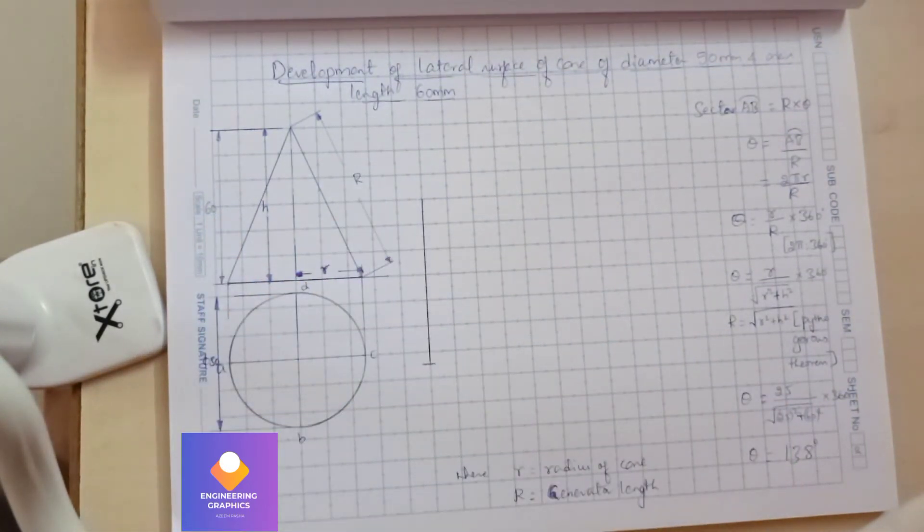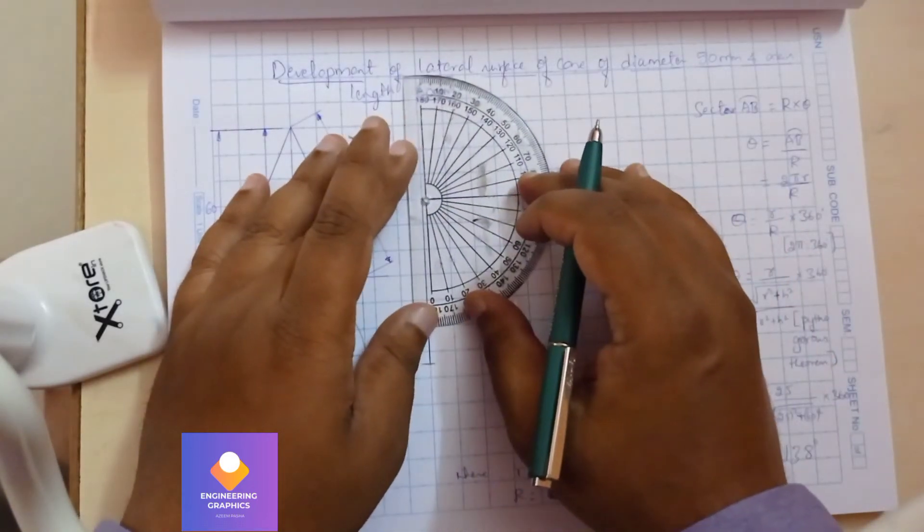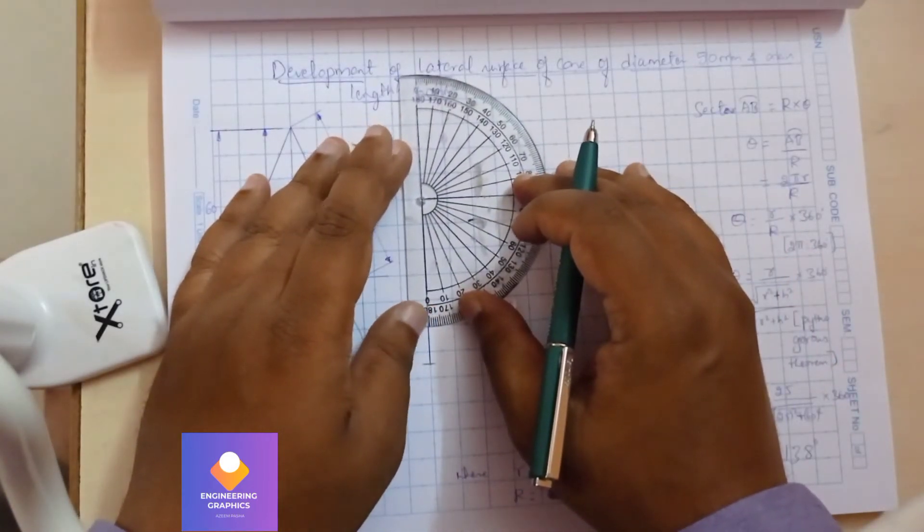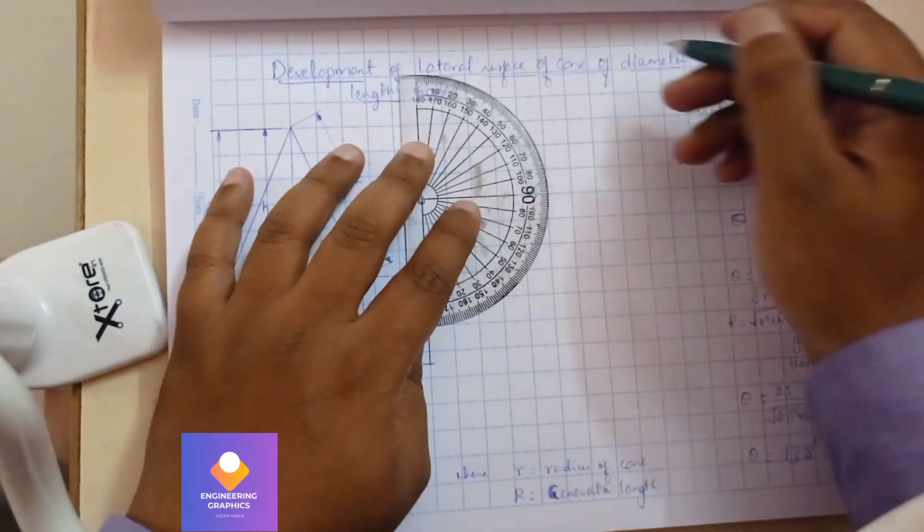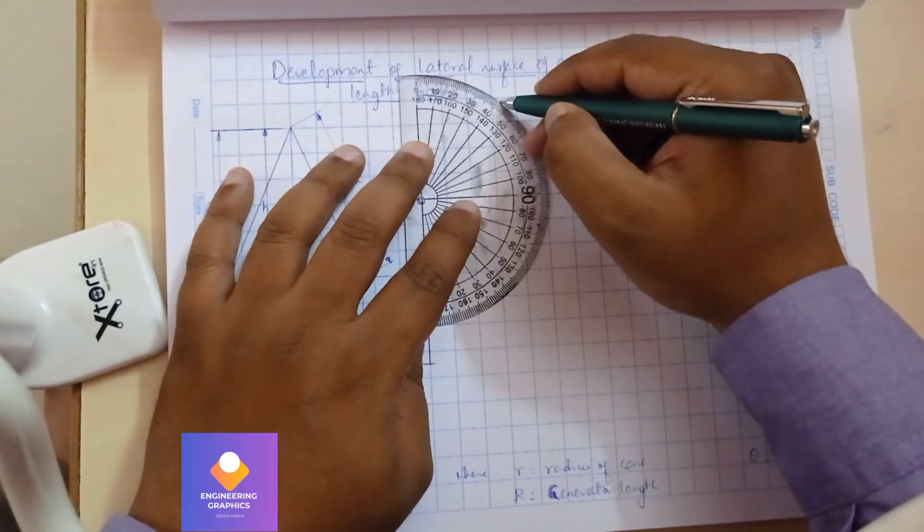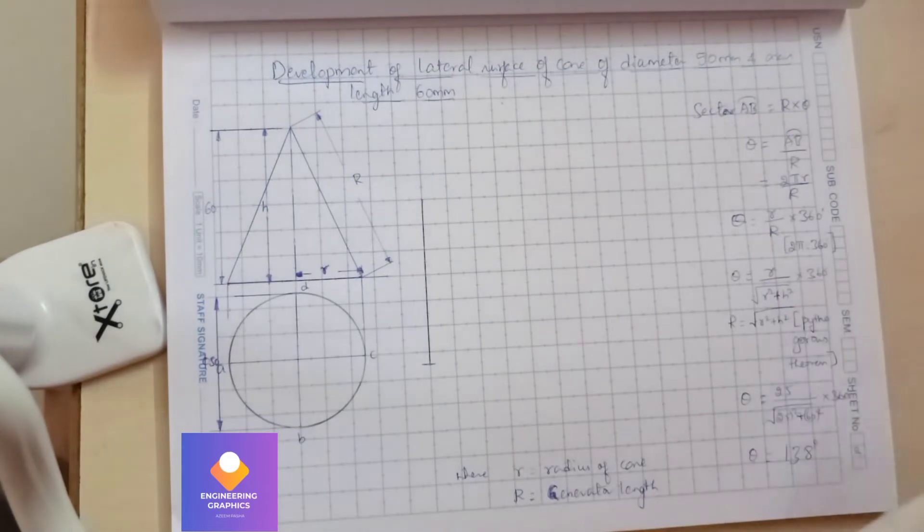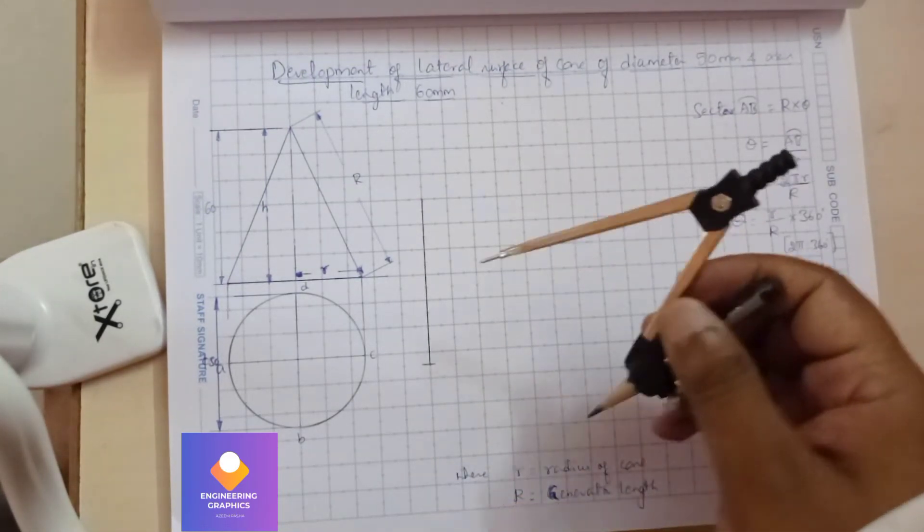I will be marking at 138 degrees - 140, 139, 138 degrees, okay. So how to sweep? You can see here we're taking this length.